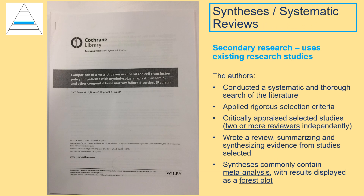The next level of the pyramid is synthesis, more commonly referred to as systematic reviews. The research process for systematic reviews involves finding existing studies — this is known as secondary research, rather than conducting primary, original research like single studies. They're called systematic reviews because there is a very systematic approach as to how they're carried out. There is usually a team of researchers. Prior to searching, they will decide upon selection criteria that will guide which studies are included and which are excluded from the review. For example, if they are only interested in randomized controlled trials, all other studies would be excluded.